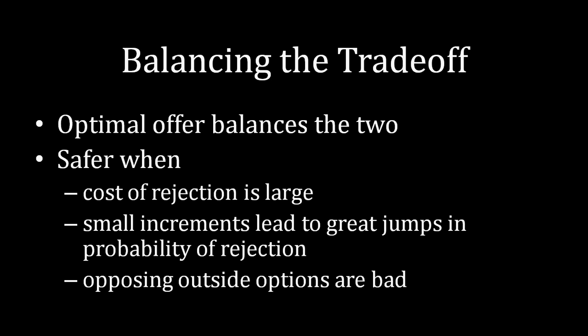We can identify three different things that make you more likely to pursue safer offers. When each of these is false, you're more likely to pursue an aggressive demand and risk rejection. First, when your cost of rejection is large, this incentivizes you to be safe. If it's going to cost you a million dollars to go find someone else to be part of your agreement, you're more likely to make a safer offer because you do not want to be stuck paying a ton of money to fix your bargaining problem elsewhere after the current deal is rejected.